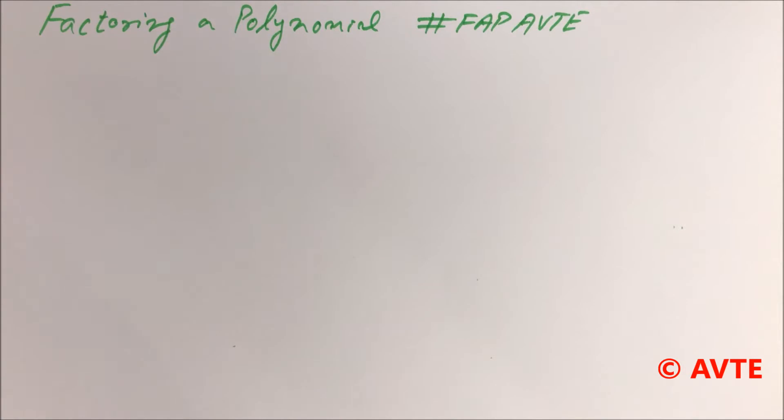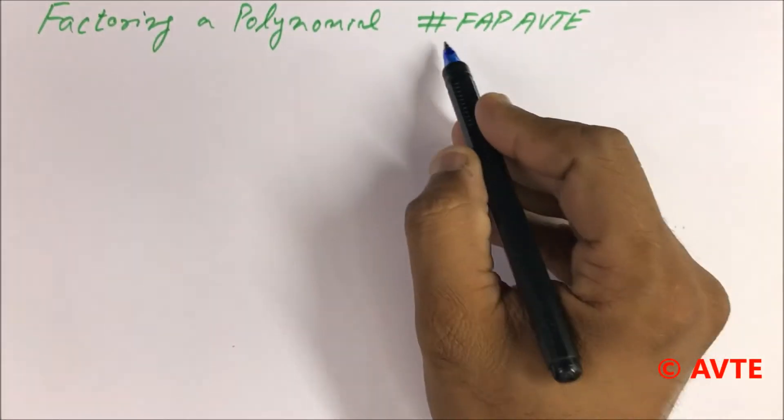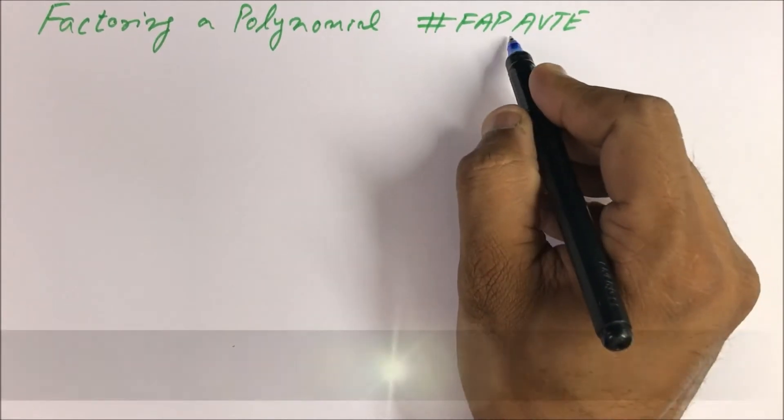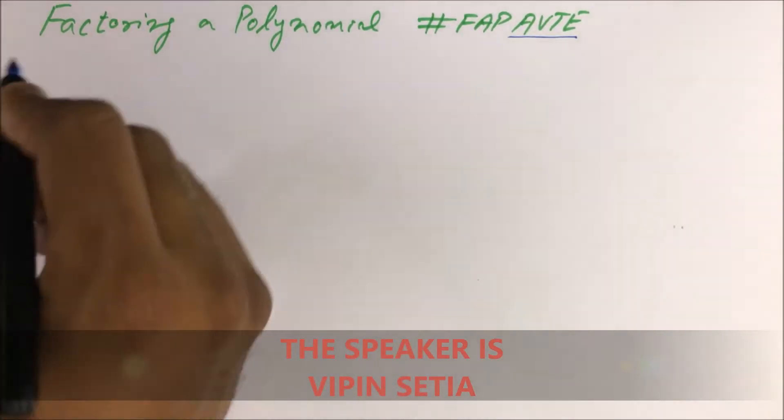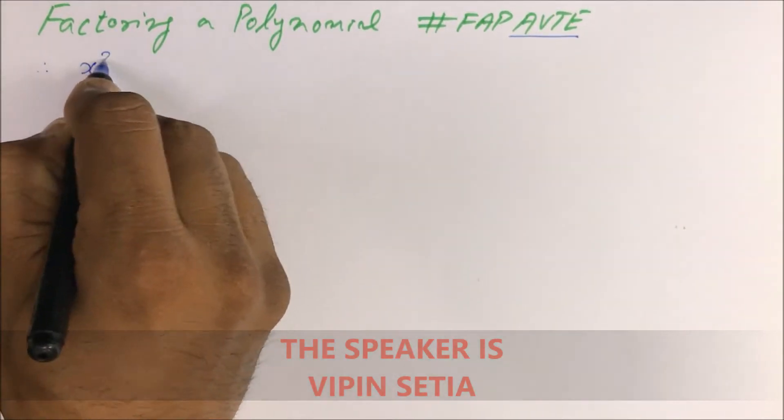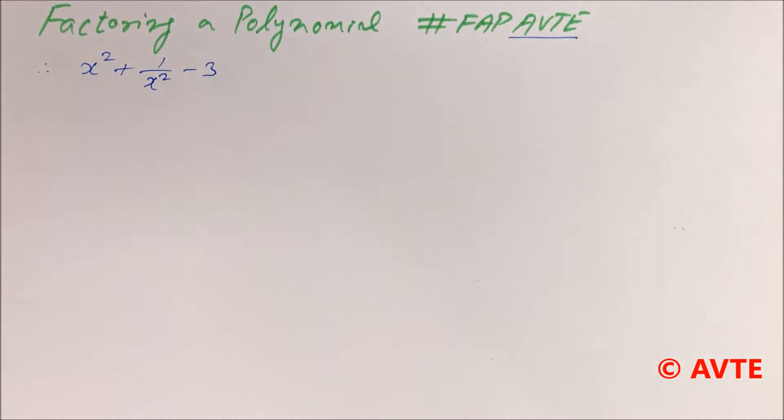Hello friends, welcome to the series of factoring a polynomial, hashtag FAP, in the channel AVTE. Today we are doing a new question: x square plus 1 by x square minus 3.